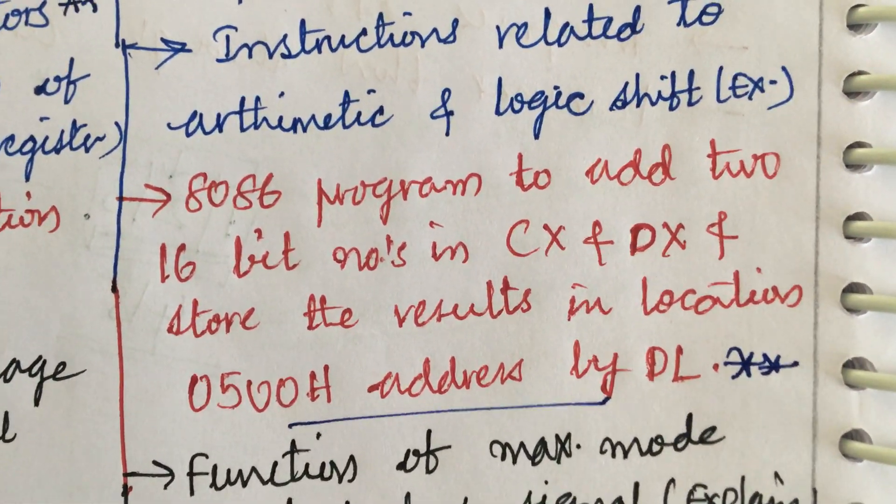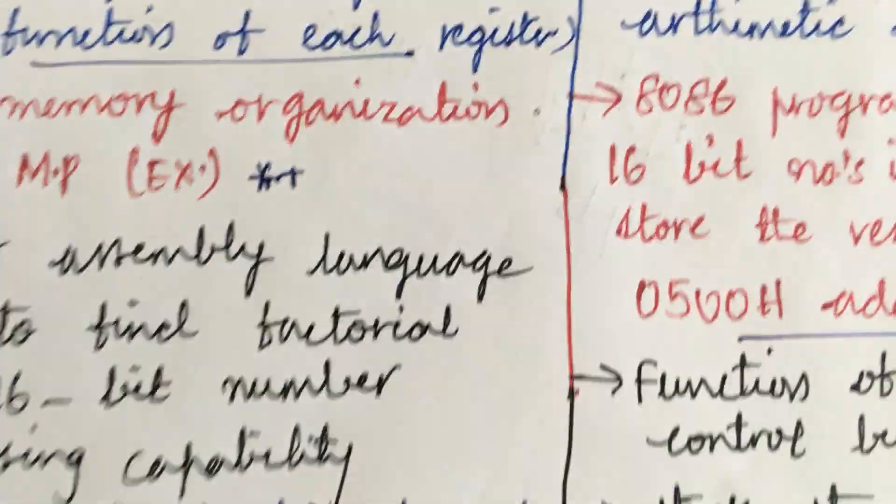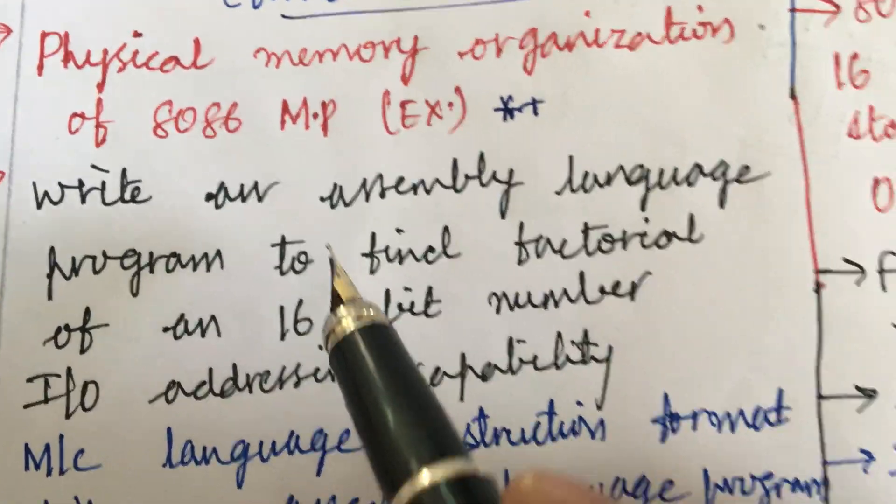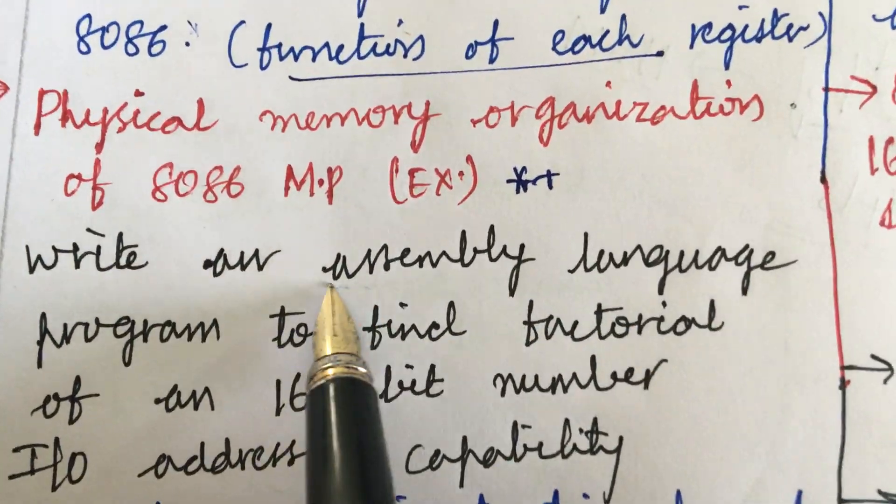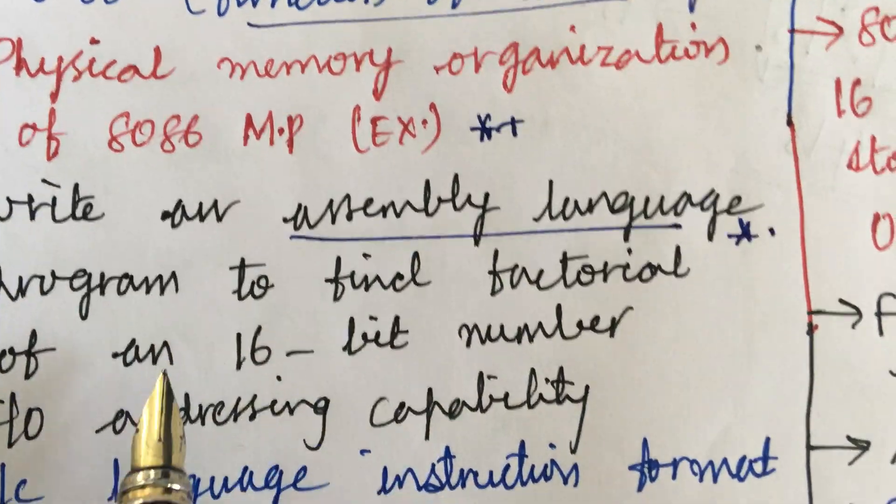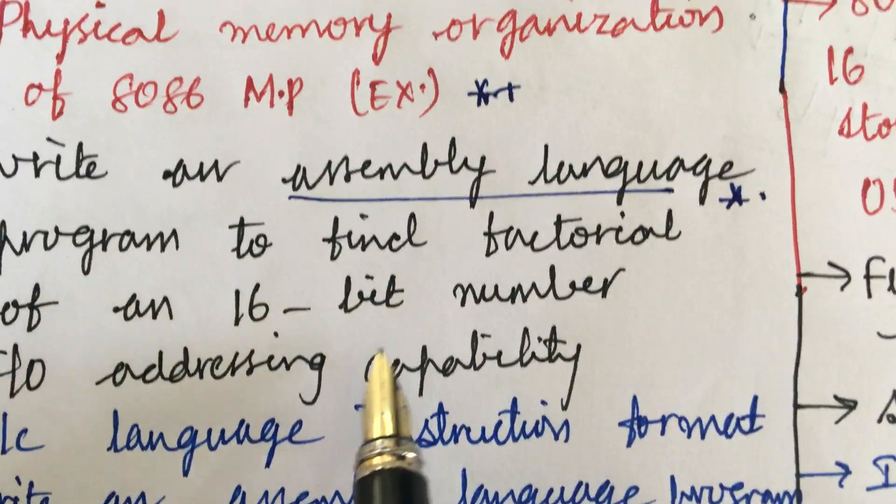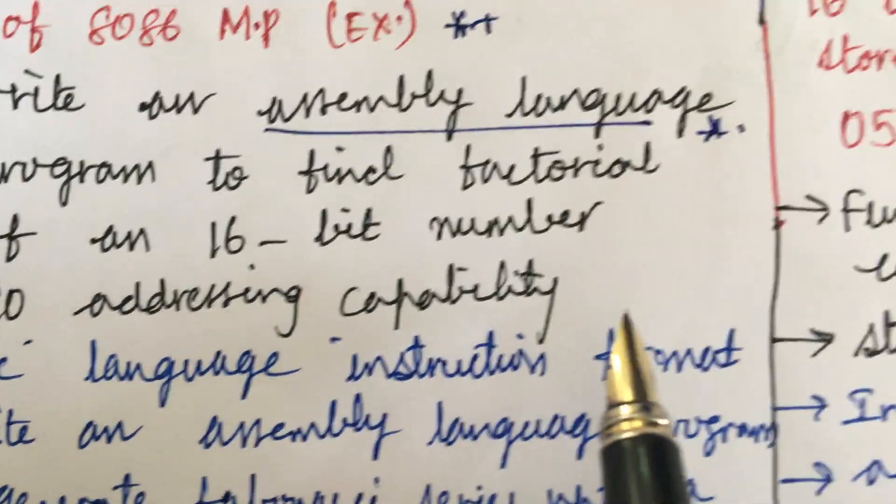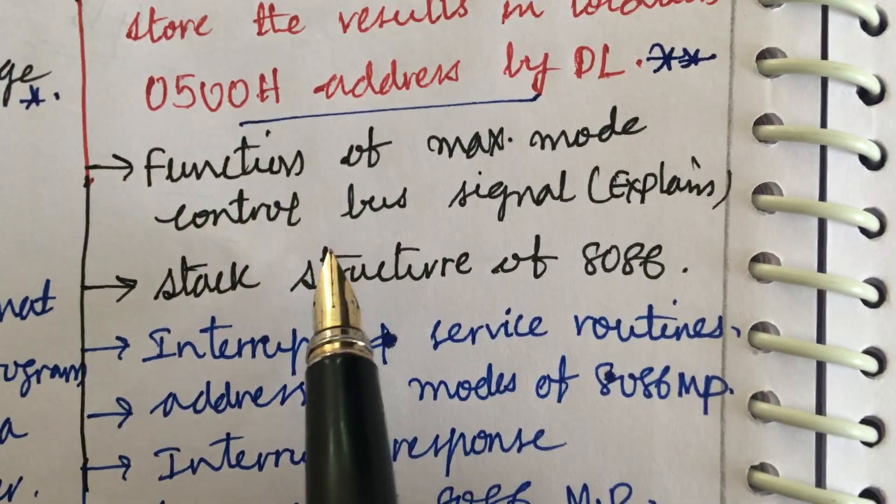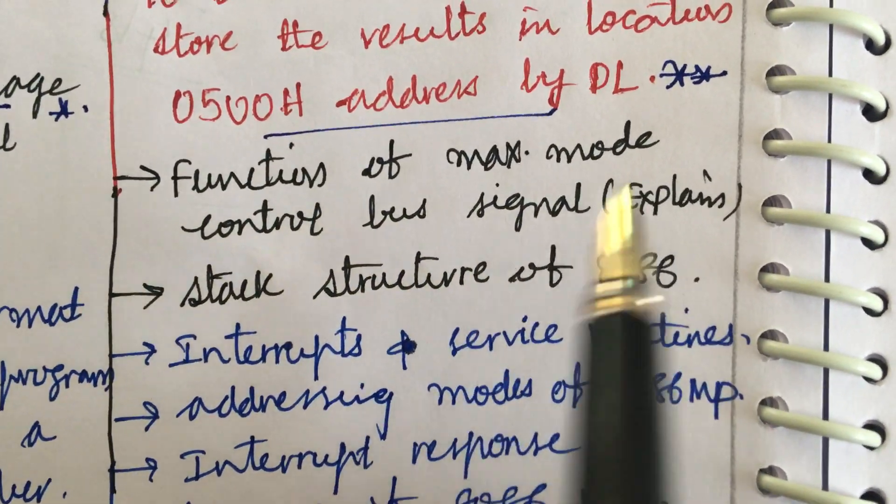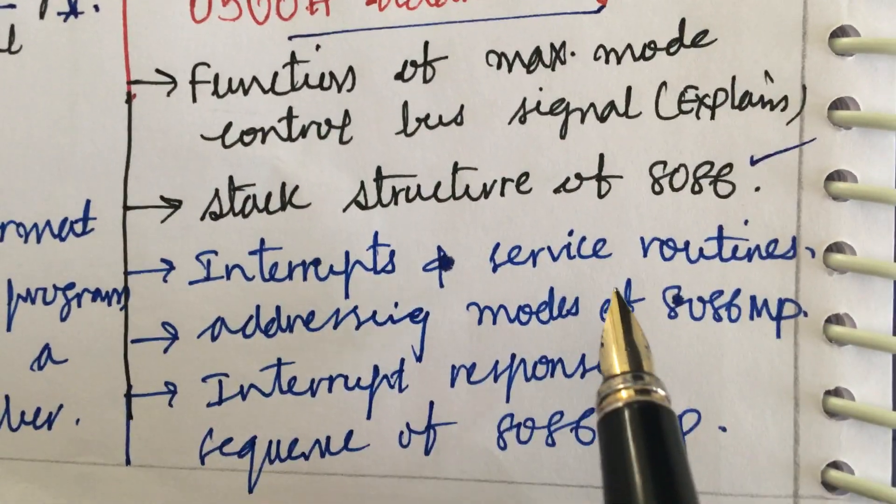You are attempting either 6AB or 7AB only dear students. You are not going to attempt 6A and 7AB, that is nowhere valid answer in evaluation. Write an assembly language question is set with the topmost question, program to find the factorial of 16-bit number, input output addressing capability and the function of maximum mode control bus signal, explain it, stack structure the short question, interrupt and service interrupt service routine the short question.